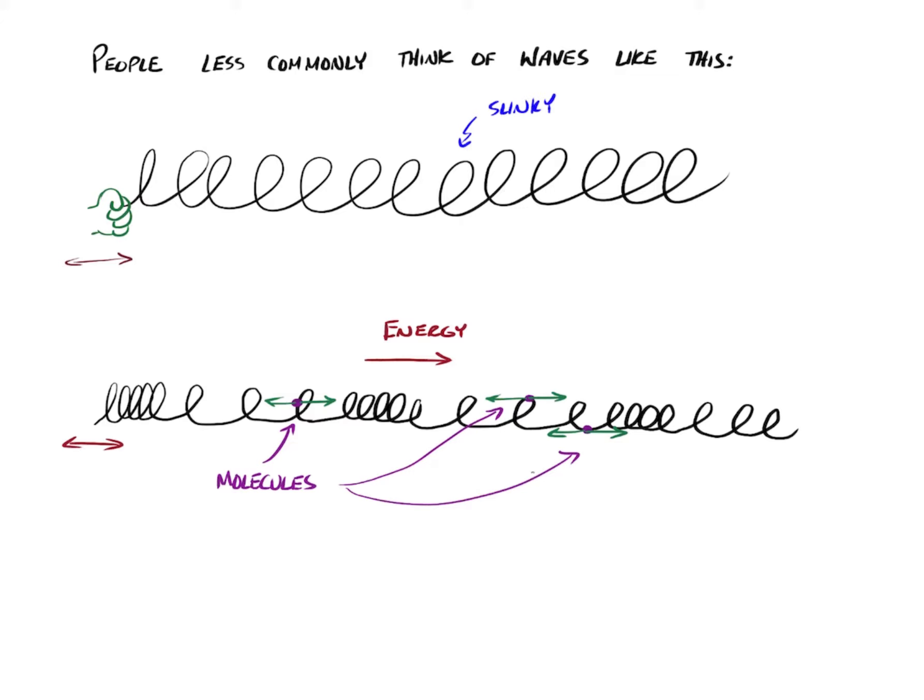They'll hit your friend's hand who's holding the other end. So in a case like this, the energy is still moving to the right. By pushing that slinky forward and backwards, we're sending these compressed sections to the right, so the energy is to the right. But if we were to analyze any individual molecule on this slinky, it's not moving up and down. It's moving side to side.